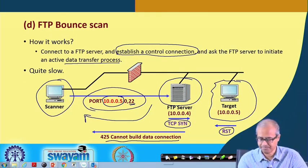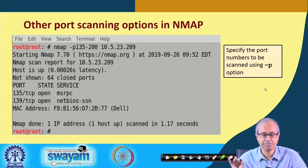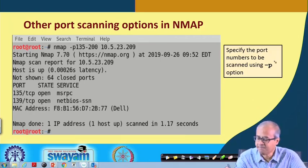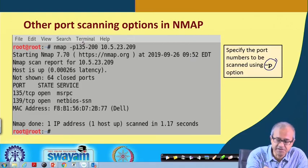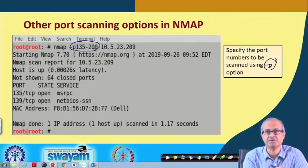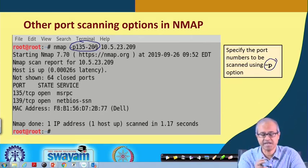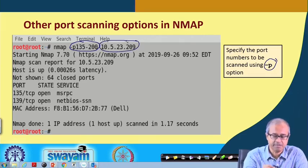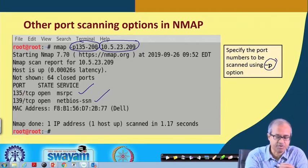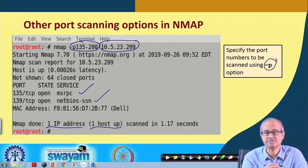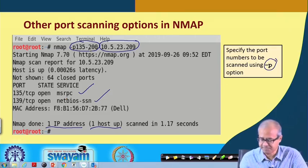Now for some port scanning options: the minus p option specifies port numbers, and you can also specify a range of port numbers. For example, minus p 135-200 scans all port numbers in that range on a particular host. The scan concludes that only two ports are open — port 135 and port 139 — while all other ports in the range are closed. One IP address was scanned, the host was up, and these are the two open services.